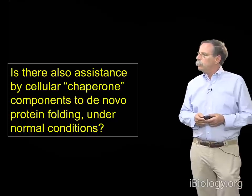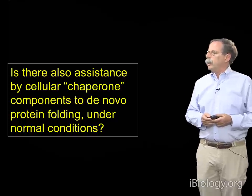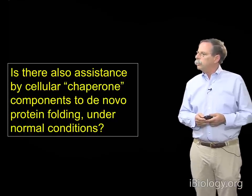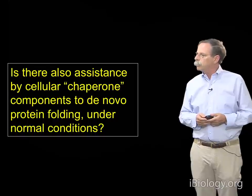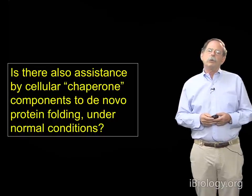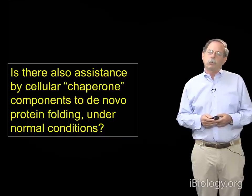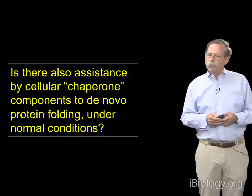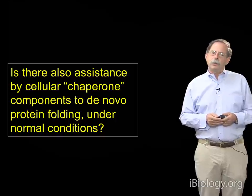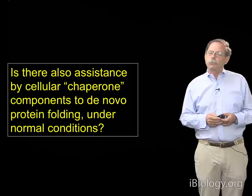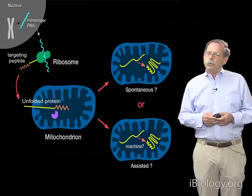This defined that heat shock proteins had something to do with protein conformation and protecting the cell from protein aggregation. The question remained open, however, as to whether such components — these so-called chaperones — could have any role in de novo protein folding under normal conditions. It seems, as has been quoted, that nature leaves nothing to chance, and that seems to be the case with de novo protein folding as well.